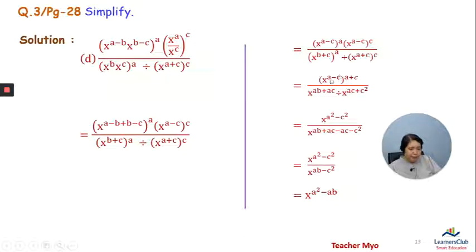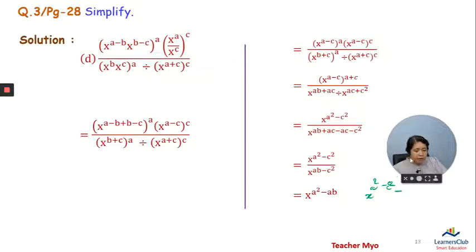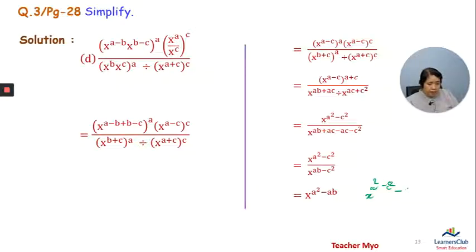The power of a minus c is a plus c. We get x power ab plus ac times x power ac plus c squared, over ab plus ac minus ac minus c squared. This simplifies to x power a squared minus c squared, then x power a squared minus c squared minus ab, which gives us x power a squared minus ab.